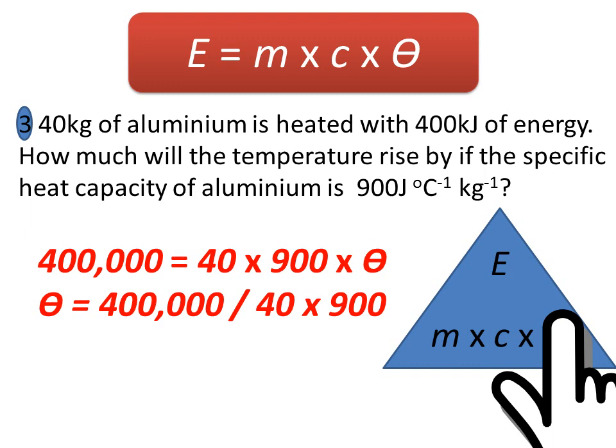Be careful in your calculator that you have 40 times 900 in brackets, and this will give us a temperature rise - sorry, that's a mistake there - I should say theta is equal to 111.1 degrees centigrade. Okay, thank you very much.